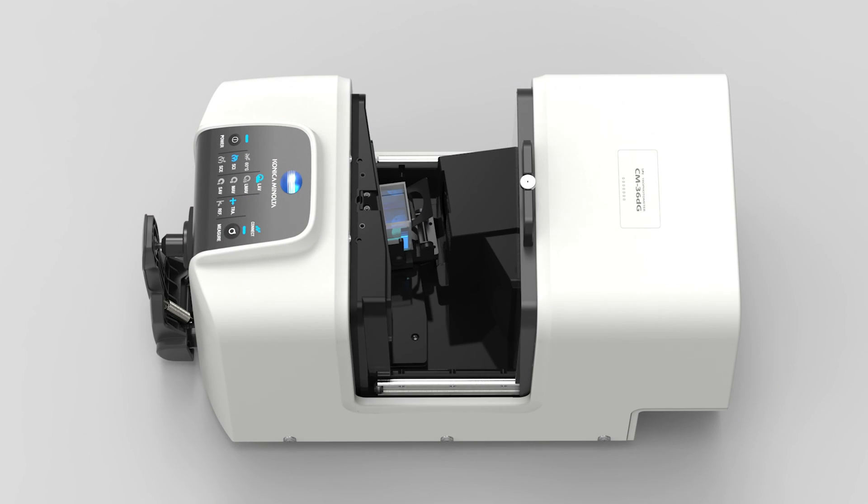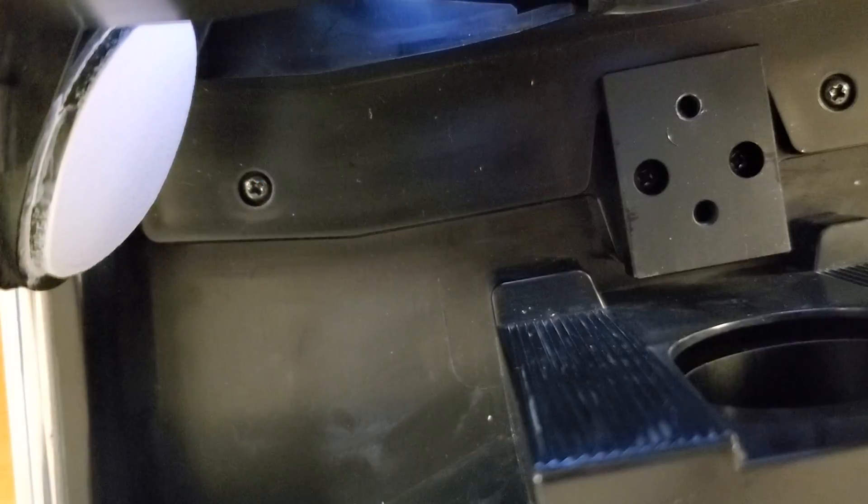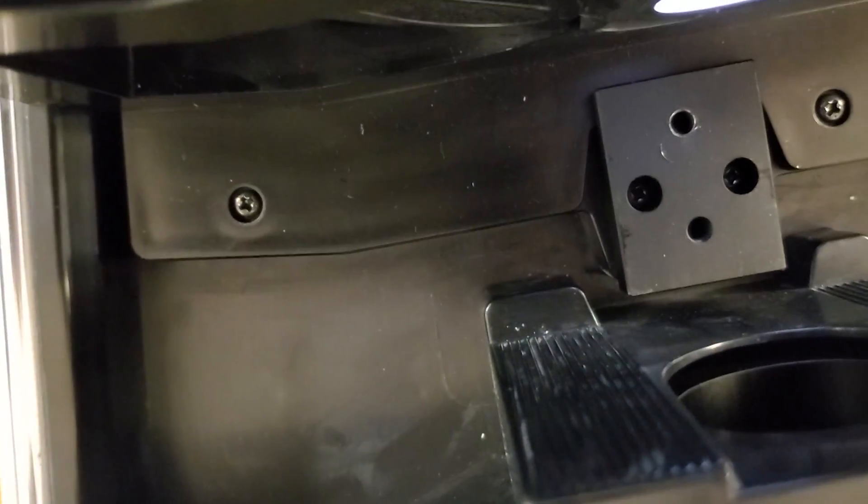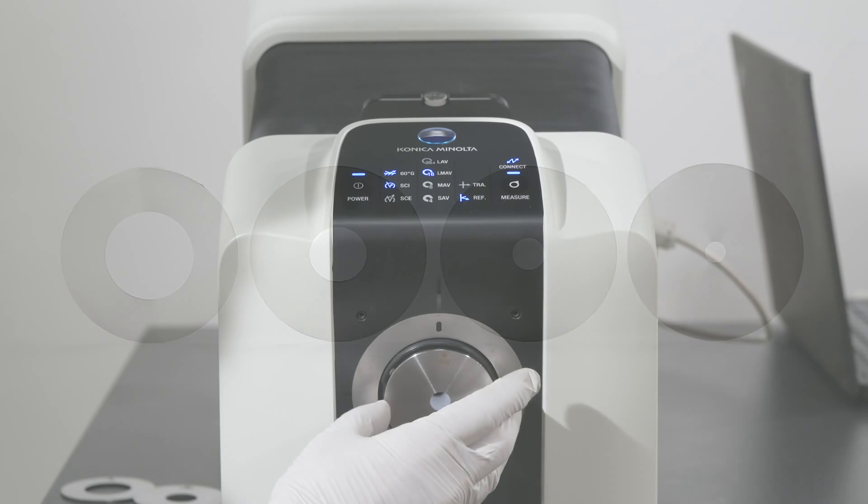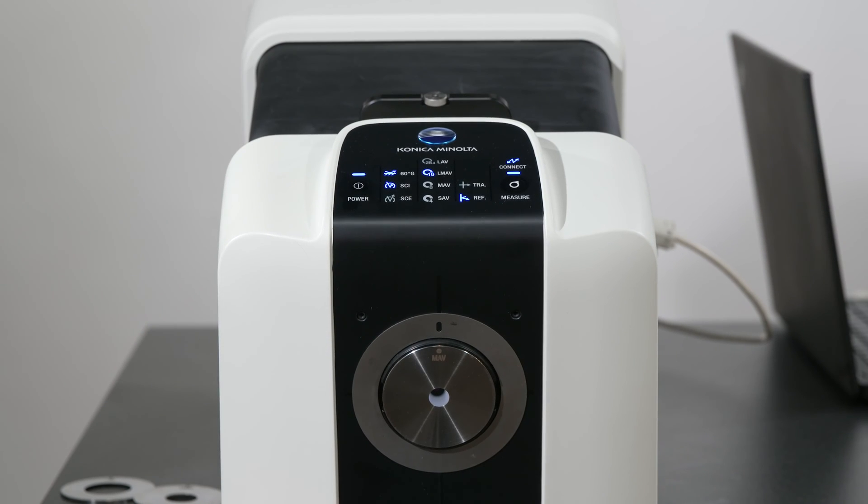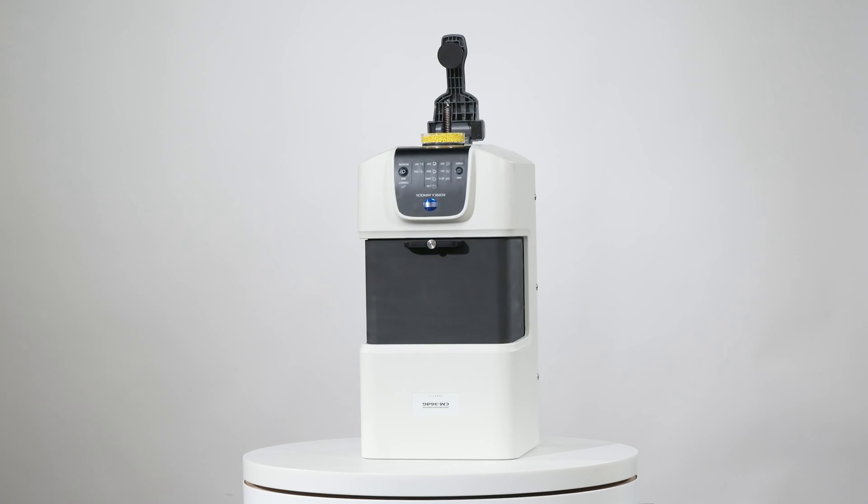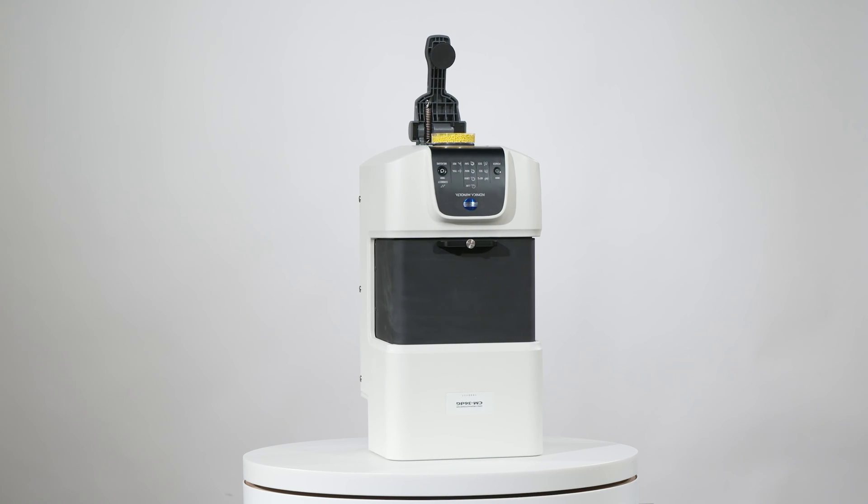The CM36DG includes several new features to improve the user experience: a larger transmission chamber, SCI-SCE mechanical port, an integrated camera viewfinder for video preview of the sample, four target masks, auto detection of target masks shown on the display indicator, and the instrument can be placed vertically for top loading measurements.